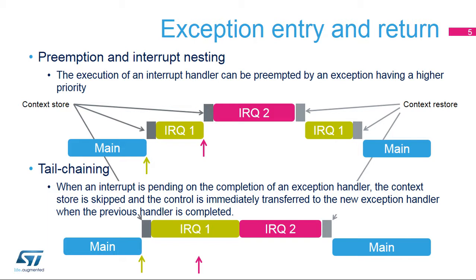The NVIC provides several features for efficient handling of exceptions. When an interrupt handler is being served and a new request with higher priority arrives, the new exception can preempt the current one. This is called nested exception handling. The previous exception handler resumes execution after the higher priority exception is handled.